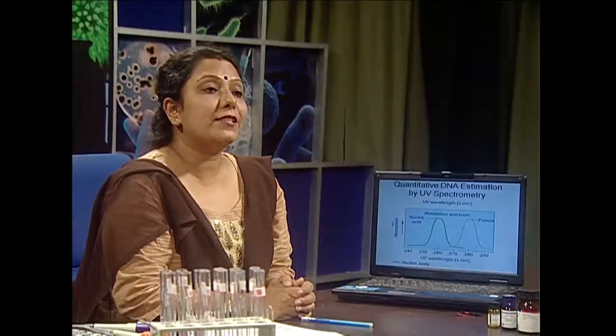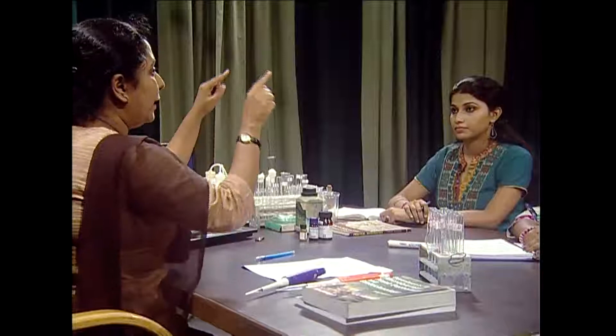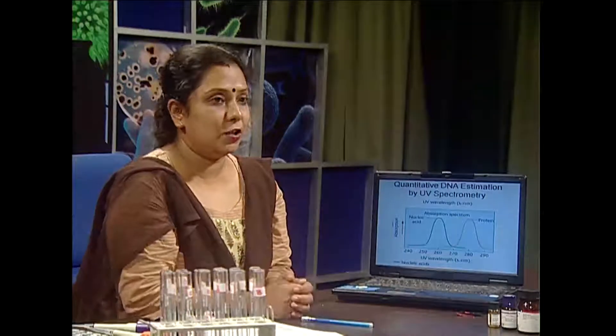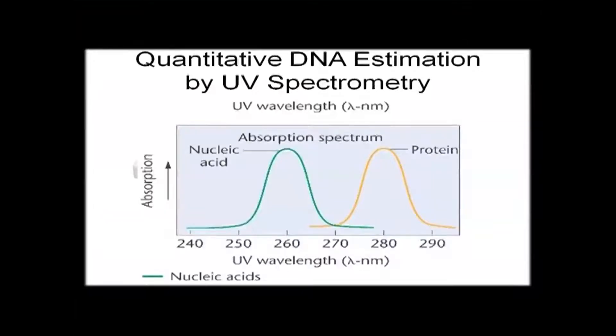DNA has heterocyclic bases, and heterocyclic bases have resonating structure with pi bonding, by which DNA can absorb light at the UV range. DNA has absorption at 260 nanometers, and the general formula is that 1 OD at 260 nanometers corresponds to 50 microgram per mL DNA concentration.